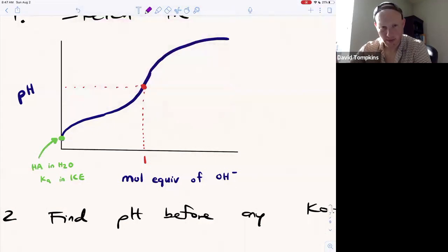When we start to add some hydroxide, we're going to be in this region. Anywhere between zero and the equivalence point is known as the buffer region, where we have some acid still there and some conjugate base is formed.